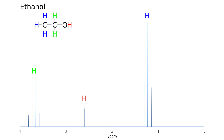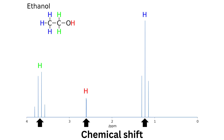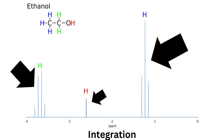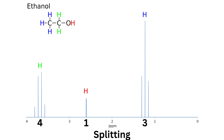When interpreting an NMR spectrum you want to consider three things: chemical shift, or where the peaks are located on the x-axis; integration, or the height of the peaks; and splitting, which has to do with the number of peaks in one cluster.